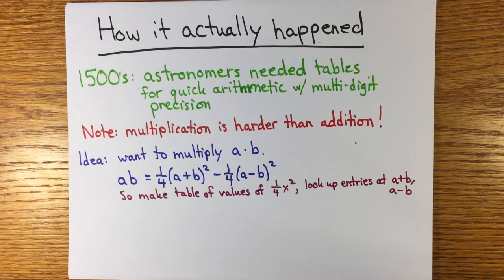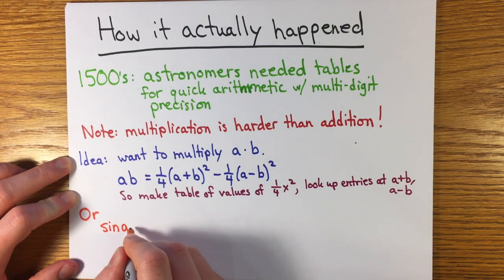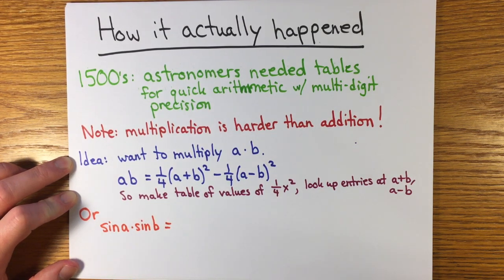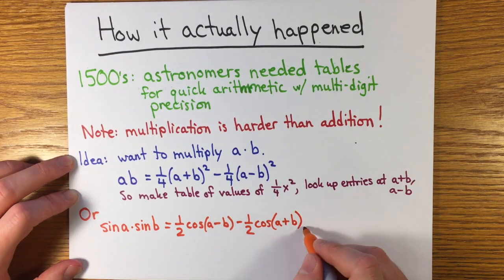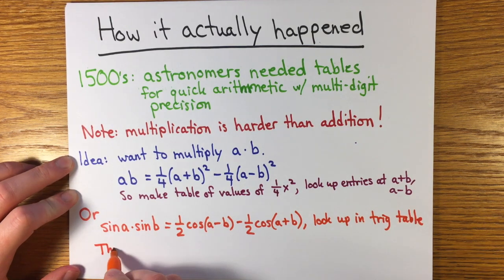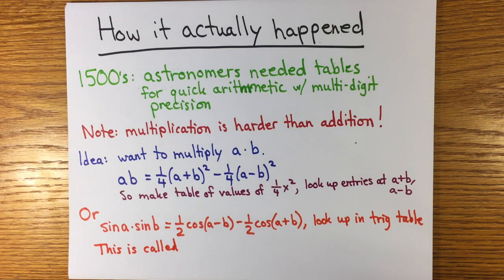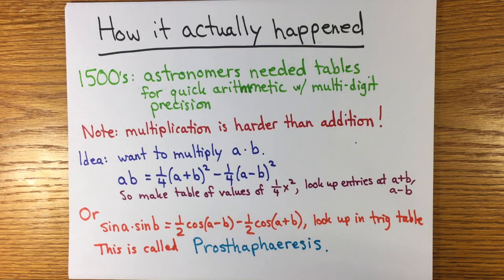Use the identity ab equals one-fourth a plus b squared minus one-fourth a minus b squared. To multiply a times b then, just look up the values at a plus b and a minus b in a table that you've made of values of one-fourth x squared. This method goes back once again to the Babylonians, and even these numbers were once called tables of logarithms. Alternately, because astronomers and engineers made frequent reference to trig tables, see my episode four, they could use sines and cosines for quick arithmetic. Using the angle sum identities and shifting terms around gives, for example, sine a times sine b equals one-half cosine a minus b minus one-half cosine a plus b. To multiply, for example, 0.68 by 0.43, find the angles in the first quadrant corresponding to these sine values in the table, and then subtract the relevant cosines. Using the angle sum identities like this to multiply is called prostophoresis, and basically nobody does it anymore.